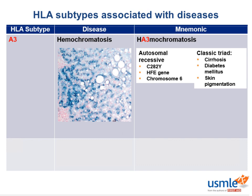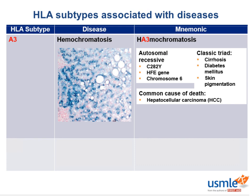Other organs affected by iron accumulation include the heart, testes, and joints, and can cause restrictive or dilated cardiomyopathy, hypogonadism, or arthropathy. With all this organ involvement, a common cause of death in patients with hemochromatosis is hepatocellular carcinoma.